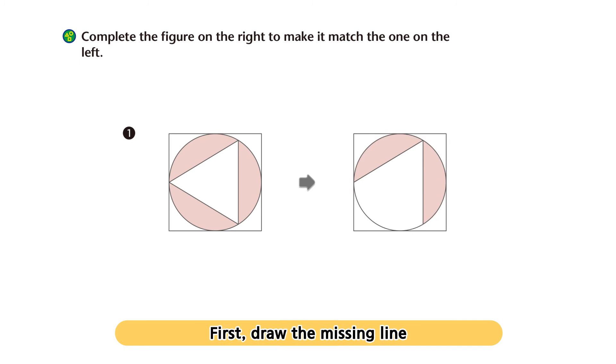First, draw the missing line to make a triangle shape. Look! The part outside the triangle and inside the circle is shaded. Find the same part and shade it. Now the two figures are the same.